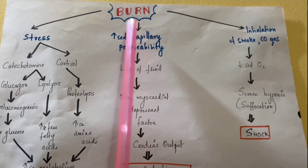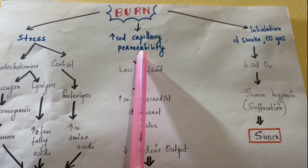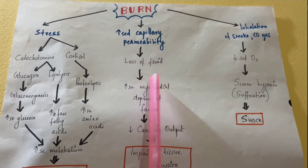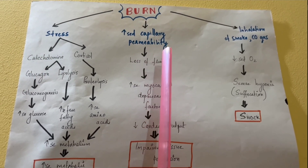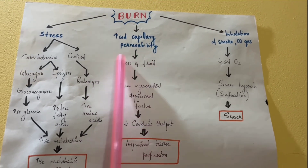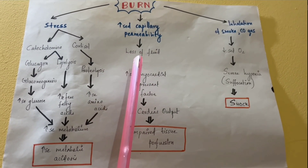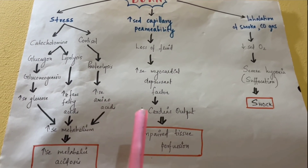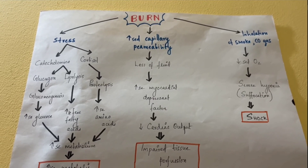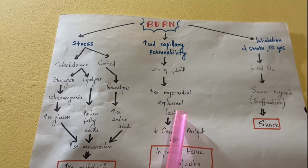When burn injury occurs, capillary permeability increases throughout the body. Molecules such as water, sodium, and potassium leak out, resulting in fluid loss. This fluid loss causes hypovolemia. As the body approaches hypovolemic shock, the brain detects this and releases myocardial depressant factor.